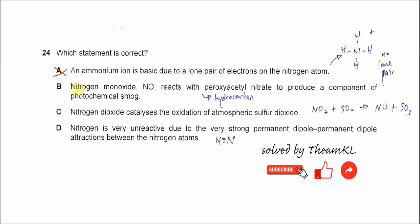B. Nitrogen monoxide reacts with peroxyacetyl nitrate to produce a component of photochemical smog. The component for the photochemical smog is actually the peroxyacetyl nitrate. So the one that reacts with nitrogen monoxide is the unburned hydrocarbon. So this statement is wrong.